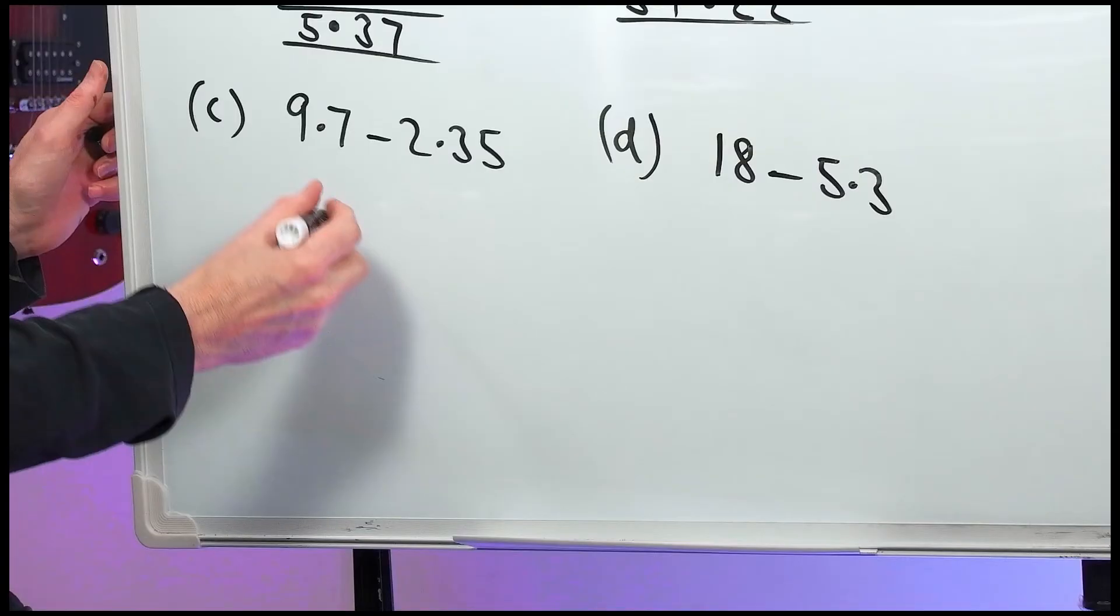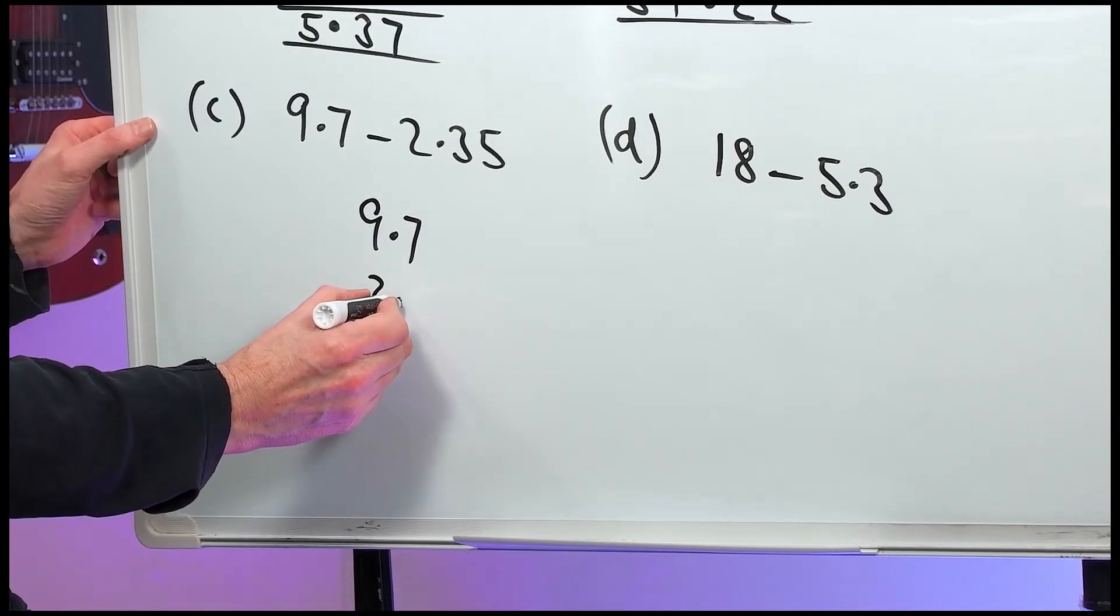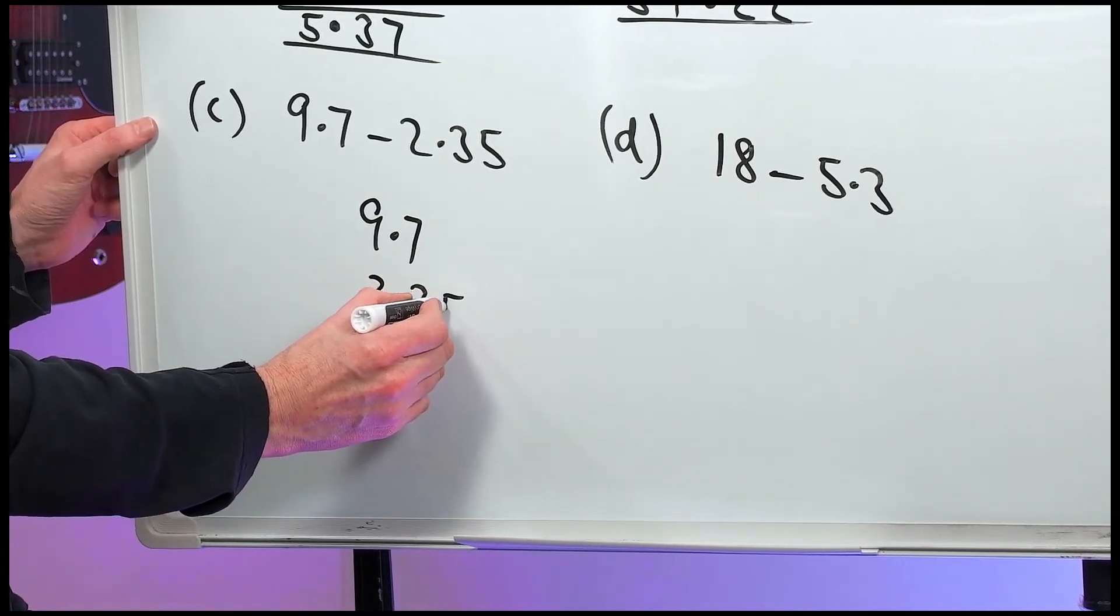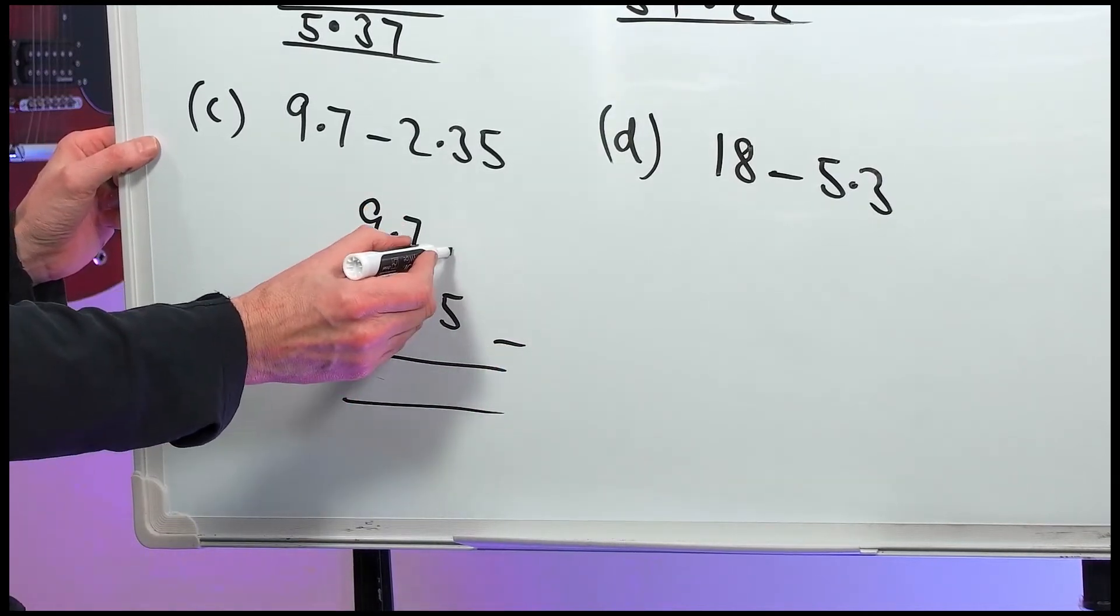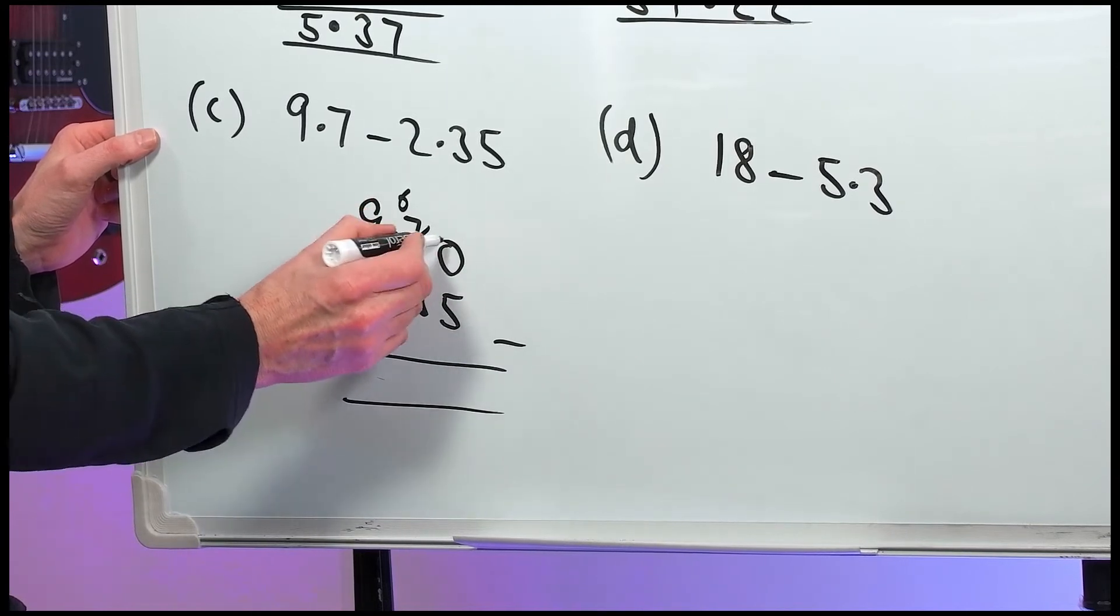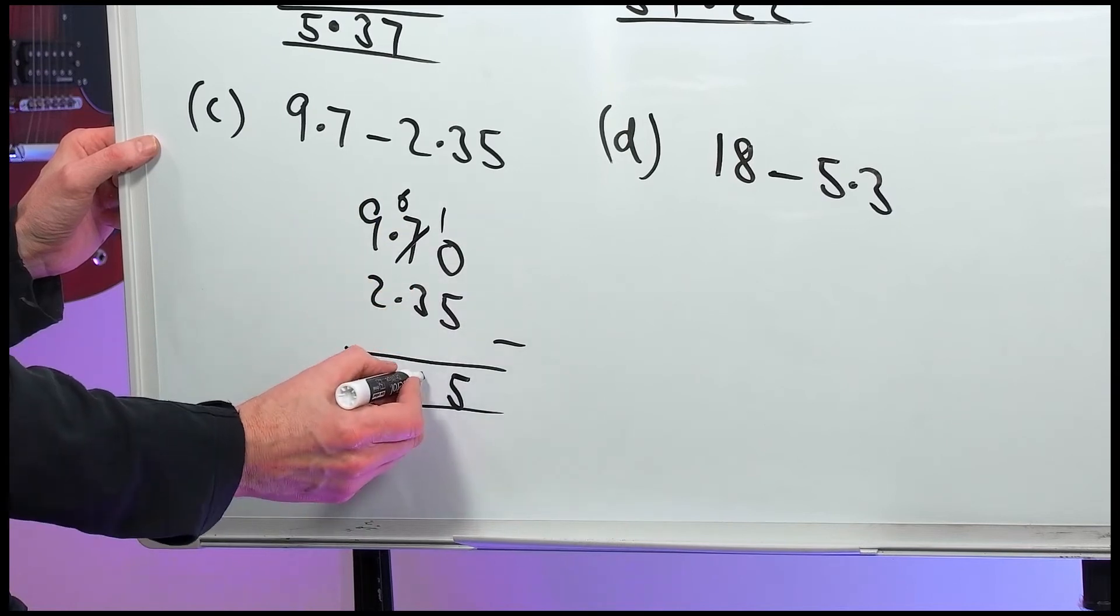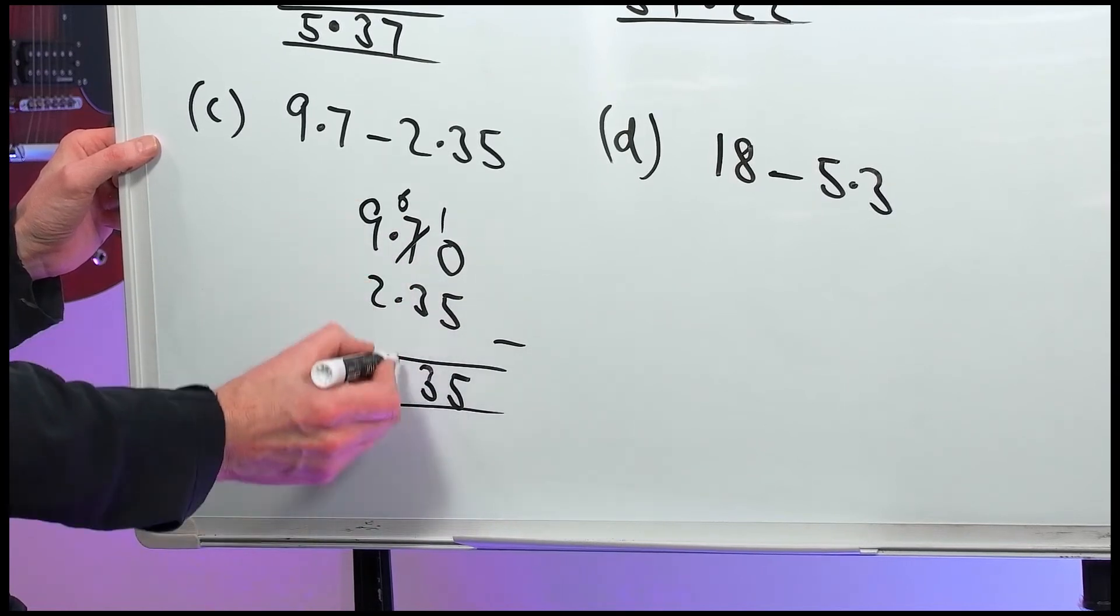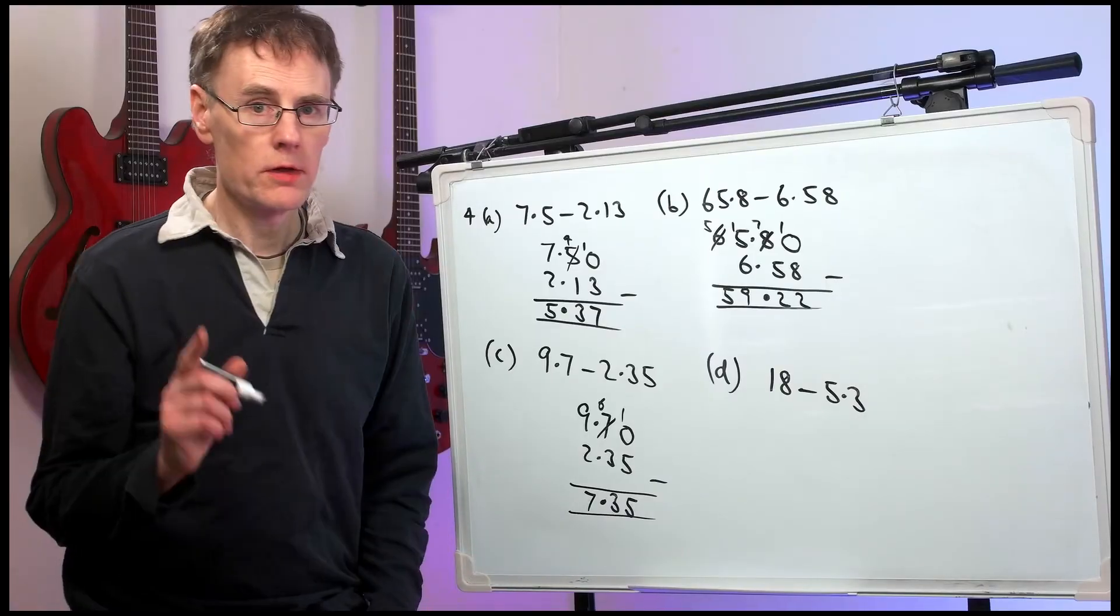Part C. 9.7 must go on top. Take away 2.35. You can't change the order. Nothing take away 5. Put that 0 there. Steal one from the 7 to leave 6. 10 take away 5 is 5. 6 take away 3 is 3. Decimal point lines up. 9 minus 2 is 7. 7.35.